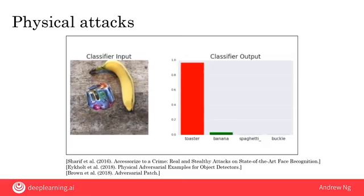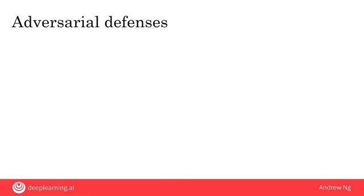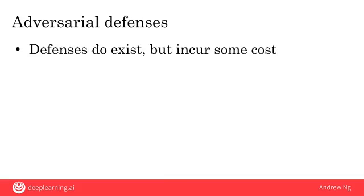What can we do to defend against these adversarial attacks? Fortunately, the AI world has been working on new technologies to make them harder to attack. The defenses tend to be very technical, but there are ways of modifying neural networks and other AI systems to make them somewhat harder to attack. One downside is that these defenses do incur some costs — for example, the AI system may run a little bit slower. This is an area of ongoing research and we're far from having adversarial defenses good enough for all the important applications.